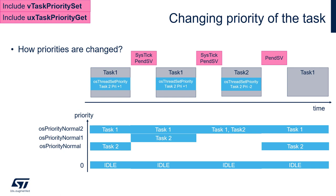We will reuse the previously used exercise with two tasks, task 1 and task 2. Task 1 will have higher priority than task 2. We will also have the idle task with the lowest possible priority, so priority 0. Within task 1, we will increase the priority of task 2 by 1.